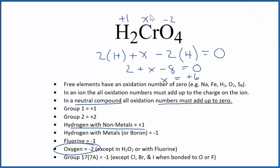So that gives us X equals a positive six. So the oxidation state here on the chromium in H2CrO4, that is positive six.